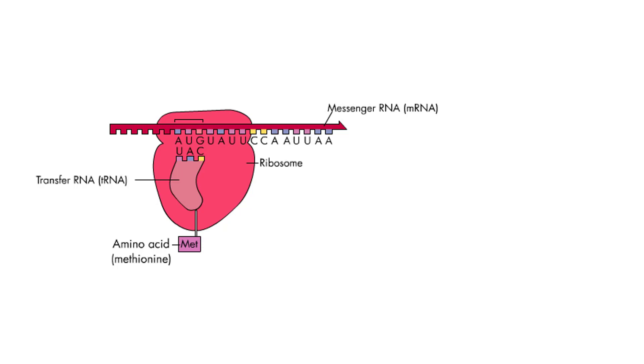This codon, which is nearly always AUG, is called the start codon. Note that the tRNA contains the anticodon UAC. By the rules of base pairing, tRNA's UAC anticodon binds to mRNA's AUG codon.